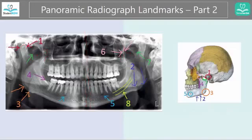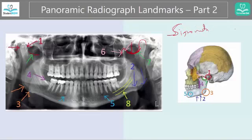Almost there. Number seven is called the sigmoid notch — this dipping part between the condyle and the coronoid process. Just take the 'S' and think about the curve, like the curves you would have between the condyle and the coronoid process. I think you can remember this now.